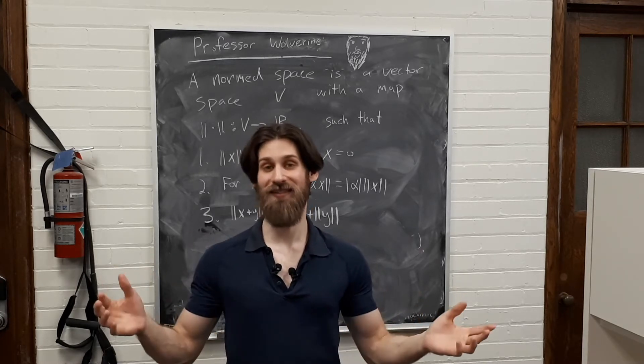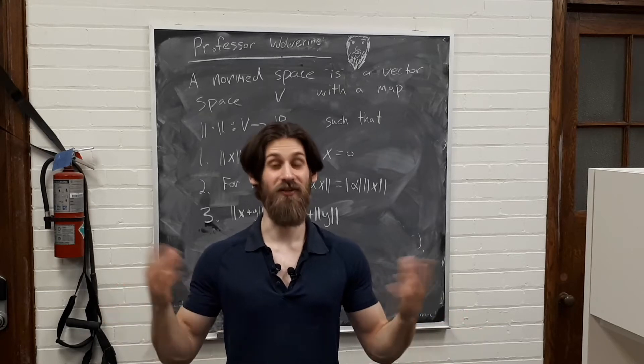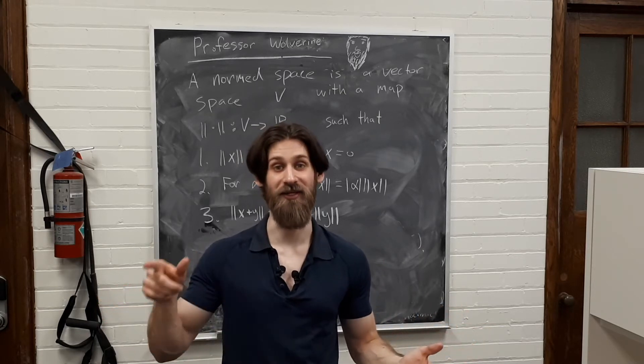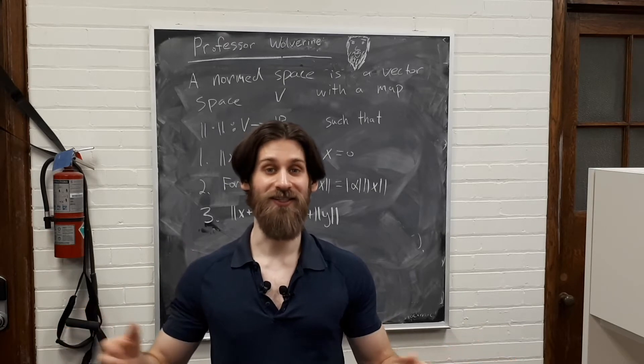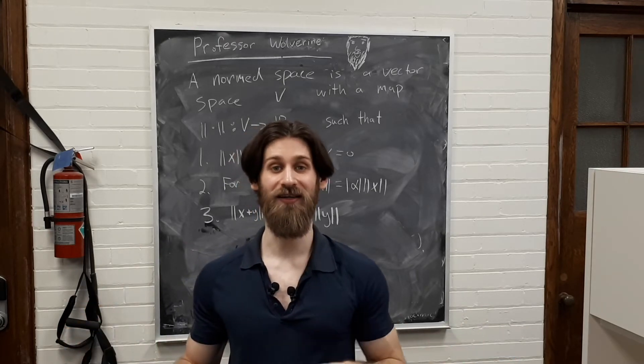So the most basic example is called Euclidean space. You know, the usual everyday way of measuring distance in R3. Now, a norm vector space is just a generalization of this. So let me tell you exactly what it is.